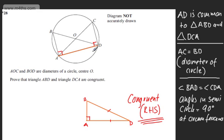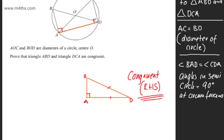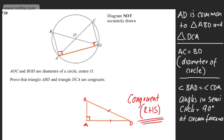I've shown AD is common to both triangles, AC is equal to BD as they're diameters of the circle, and angle BAD is equal to angle CDA. Angles in a semicircle equal 90 degrees at the circumference. So these are congruent by right angle, hypotenuse, side. That's three marks for question 28. There are lots of different approaches for that.